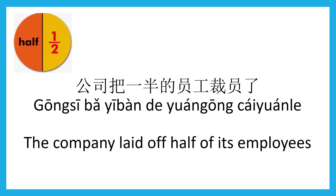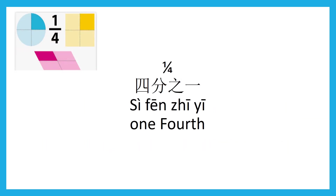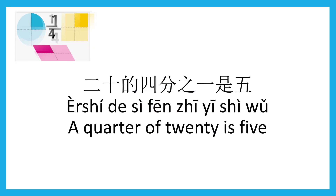The company laid off half of its employees — 公司把一半的员工裁员了 (gōngsī bǎ yībàn de yuángōng cáiyuán le). One quarter of twenty is five — 二十的四分之一是五 (èrshí de sìfēnzhīyī shì wǔ).